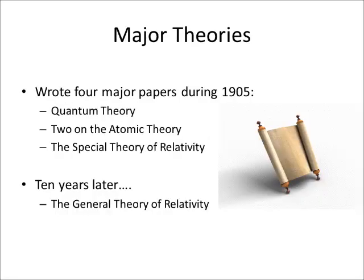He started off the year with his paper on the quantum theory. Shortly after, he published two papers on the atom proving that atoms exist, and finally his fourth paper was written on the special theory of relativity. This paper introduced the famous equation that all physicists know and love: E equals mc squared. Even after all the excitement of the Annus Mirabilis, Einstein continued his studies and continued writing theories.